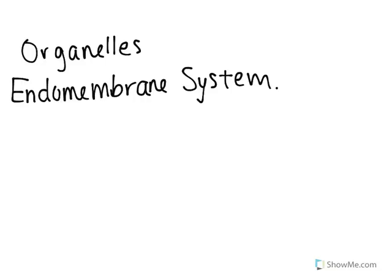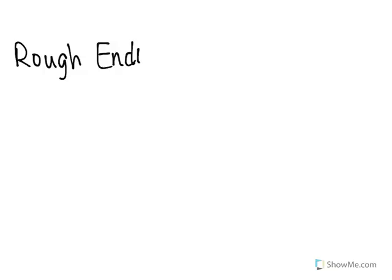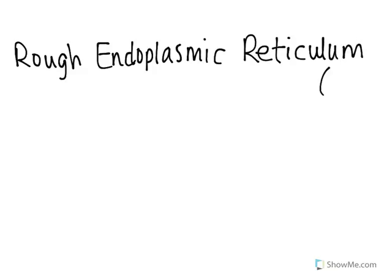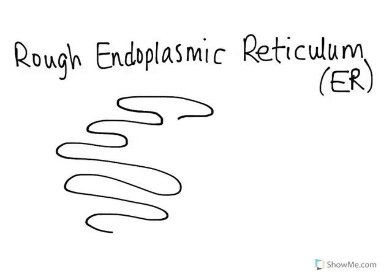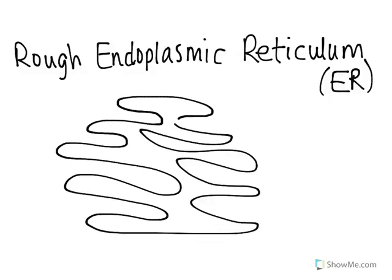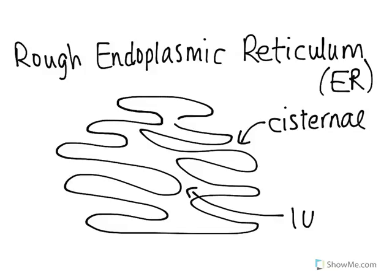We'll start out with the rough endoplasmic reticulum. The endoplasmic reticulum can be abbreviated as ER, just like emergency room. What you need to know about the rough endoplasmic reticulum is that it's composed of stacks — it's kind of wavy and has a lot of folds. These folds and stacks are known as cisternae. The inside of the endoplasmic reticulum is known as the lumen — all that open space within those folds. Specifically for the rough endoplasmic reticulum, there are ribosomes on its surface.